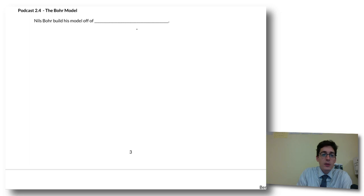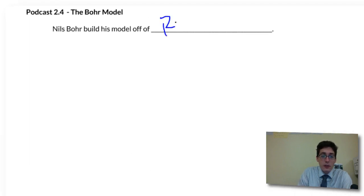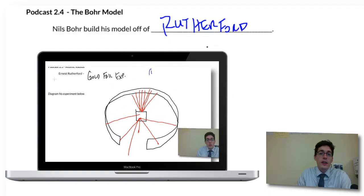So Niels Bohr was another scientist that worked with the atom, just like everyone else we've looked at, Thompson and Rutherford. He based his model of the atom off of Rutherford's experiment. Remember, Rutherford said that the atom was mostly empty space, that the nucleus was positive, and that the electrons were negative from Thompson's experiment. So this all layers really well.